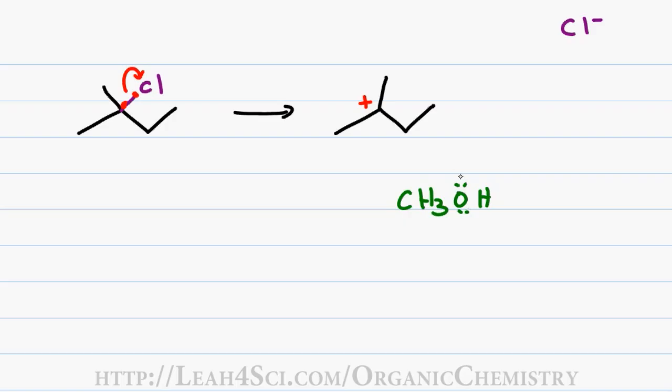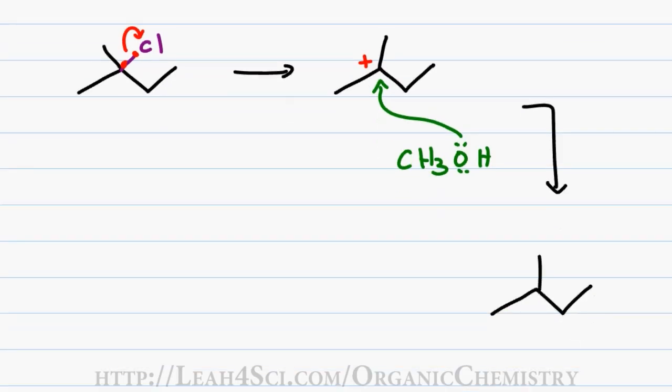The solvent molecule will reach out with a lone pair of electrons and attack the carbocation, resulting in a bond between oxygen and carbon. Since the oxygen used one of its lone pairs to create a bond, it only has one lone pair remaining giving it a positive charge.